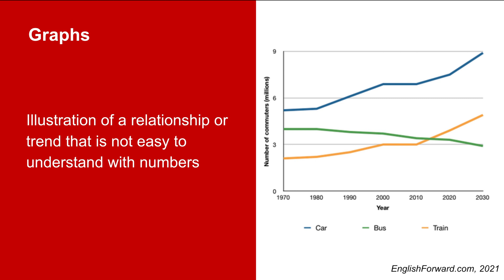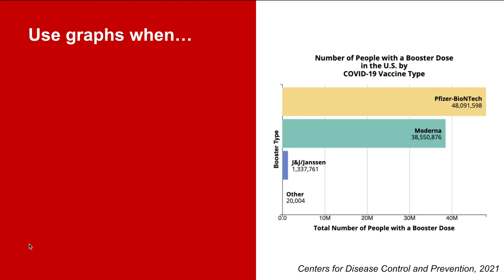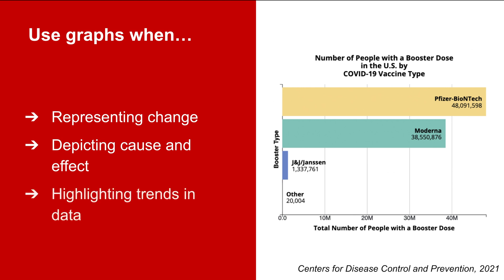For example, if you're conducting an analysis of the modes of transportation used in a city, you can use a line graph to represent the trend, as shown here on the screen. Graphs in engineering documents are used when representing change in the value of a variable over time or with respect to another variable, depicting the relationship of correlation or causation between two variables, or highlighting trends in the data.